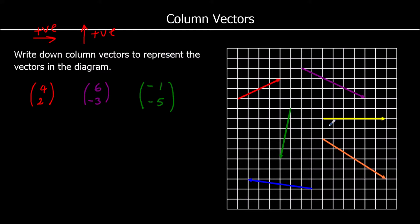This yellow vector here goes to the right 6 places, and it doesn't go up or down. It just goes to the right 6 places. So it's 6 to the right, and nothing up or down. So 6, 0.